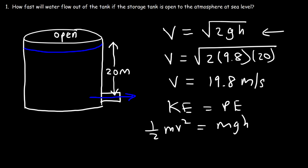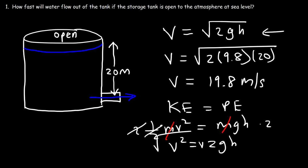We can cancel m, then multiply both sides by 2. So 2 times 1/2 is 1, giving us v² equals 2gh. Then taking the square root of both sides gives us the efflux equation. That's one way in which you can derive that equation.